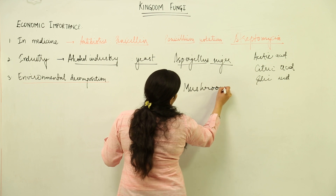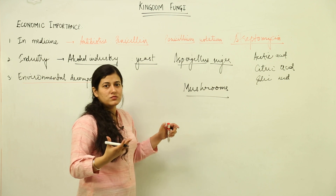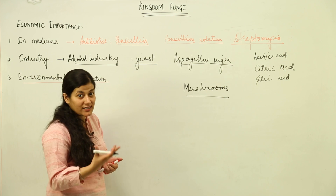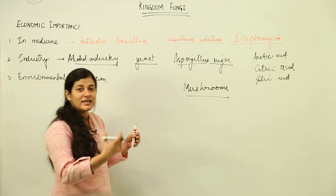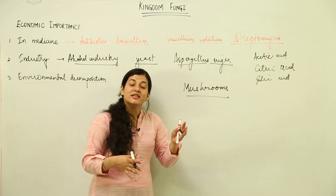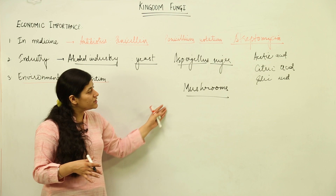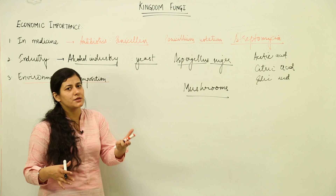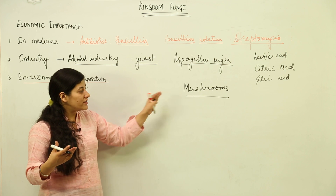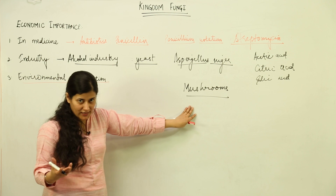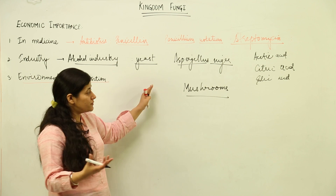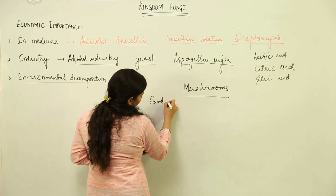Mushrooms, also known as Agaricus, are a source of food and are consumed widely, although certain mushrooms are highly poisonous and cannot be consumed. We are slowly replacing food material taken from plants with sources like single-cell proteins, algal proteins such as spirulina, and mushrooms or toadstools. This is an important economic importance because they are used as a food source as well.